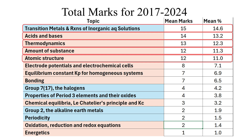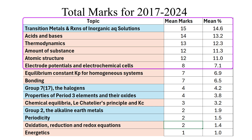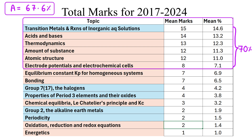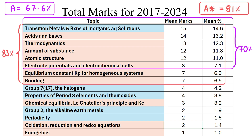For additional context, these six topics highlighted in purple have been worth on average about 70% between them. For Paper 1, on average, 67.5% is a grade A — so if you got every mark available on a paper for these six topics, that would be a grade A. And if you expanded down to the next two topics below that, you would get just under 83%. On average, to get an A* on Paper 1, you need just over 80%.